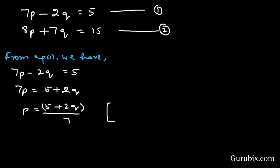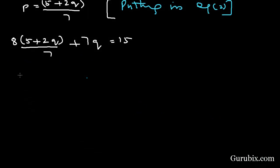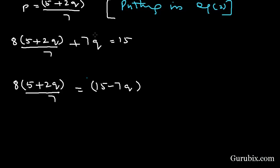Now we substitute this value into equation number 2. It becomes 8 times (5 plus 2q over 7) plus 7q equals 15. Rearranging, we move 7q to the right-hand side and write 1 in the denominator of 15 minus 7q.